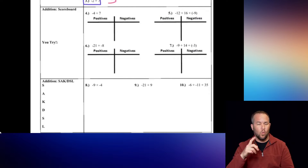On question number 4, we have negative 4, meaning the negatives got 4 points, and positive 7, meaning the positives got 7 points. The score is 7 to 4, so the positives won. To find how many they won by, subtract the two scores: 7 minus 4. The positives won by 3, so our final answer is positive 3.